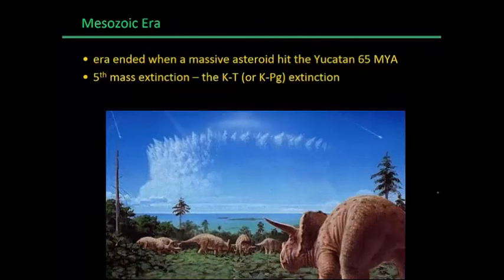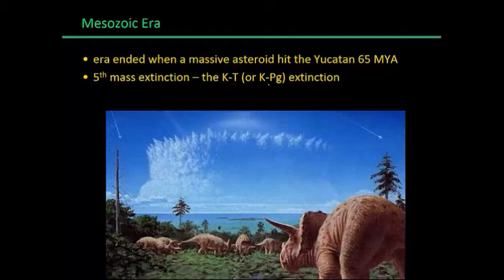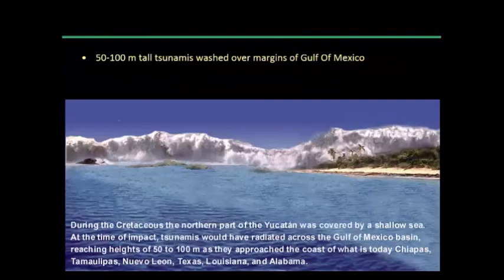The Mesozoic came to a very dramatic end about 65 million years ago when Earth was hit with a big asteroid. This is our fifth mass extinction in Earth's history, also known as the KT or more recently the KPG extinction — which stands for Cretaceous-Tertiary or Cretaceous-Paleogene Extinction. The asteroid hit in an area of Mexico near the Yucatan, just offshore.